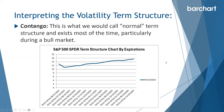Contango happens most of the time in a bull market — it's what we consider normal market conditions. The reason volatility is higher for those longer-dated options is because with more time in the option, there's more potential for something bad to happen. So we need to be compensated for that in terms of higher volatility.